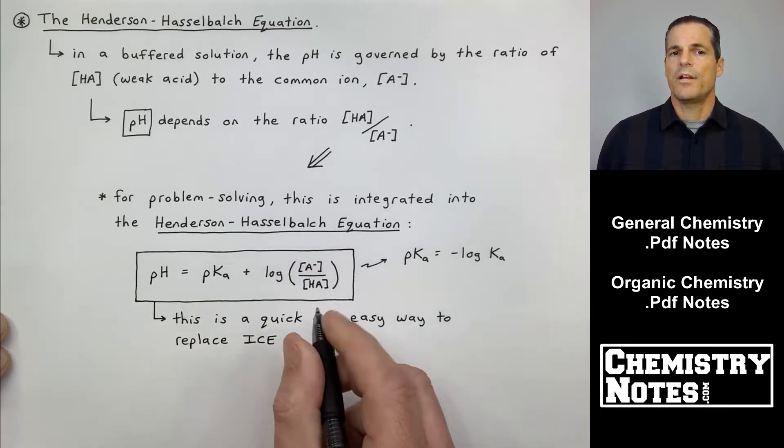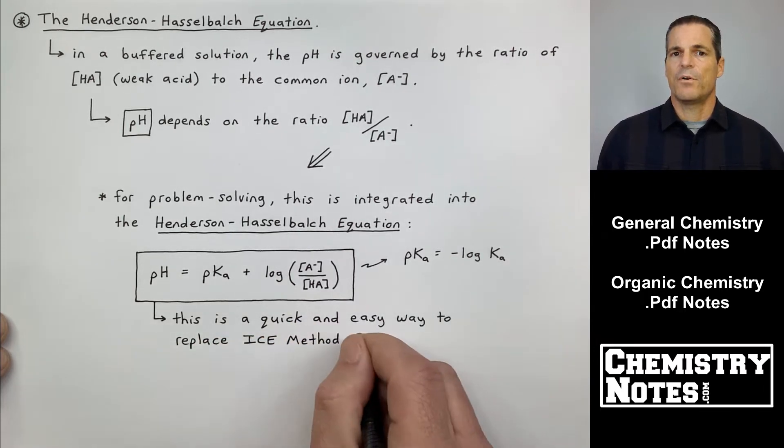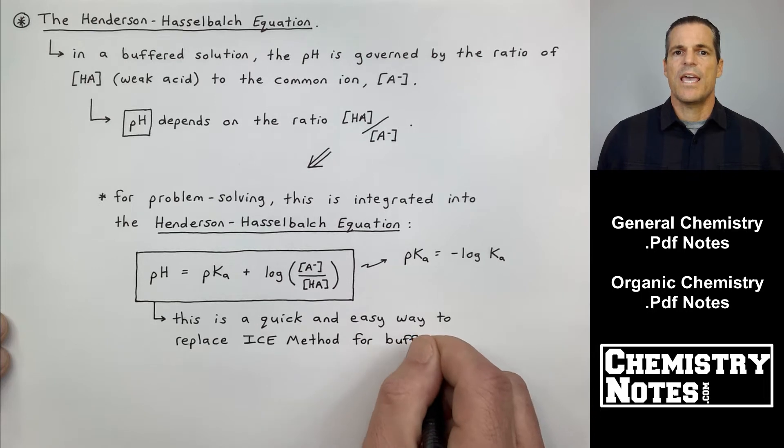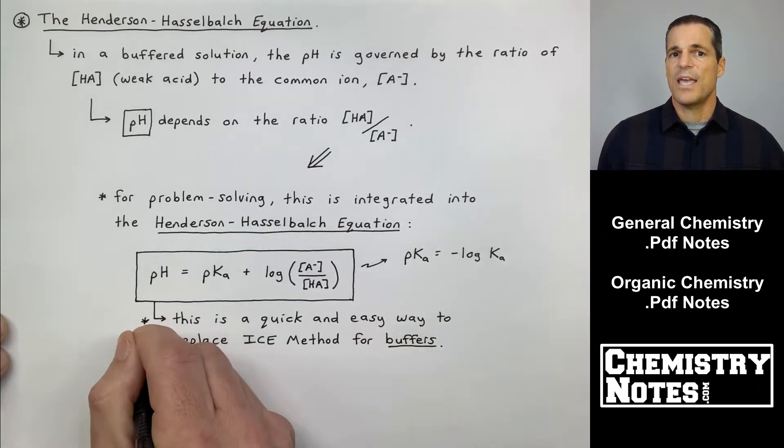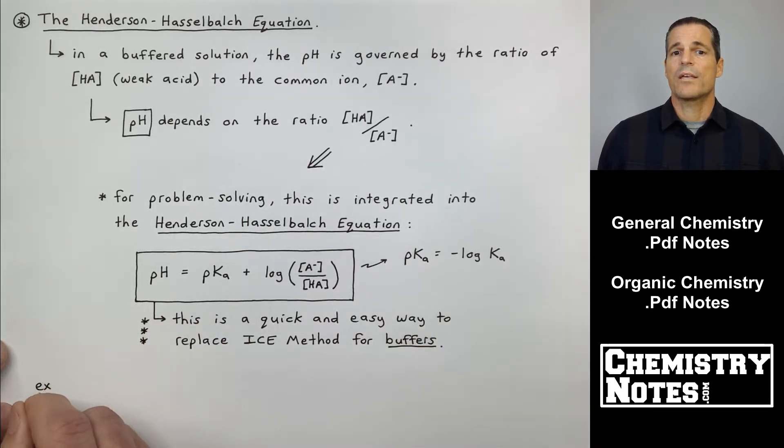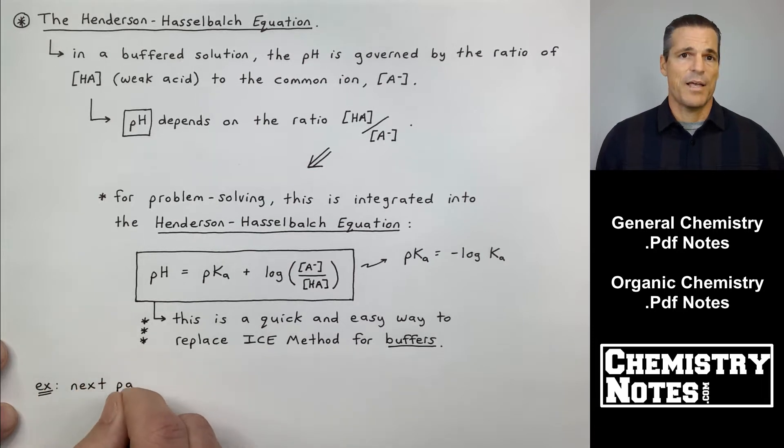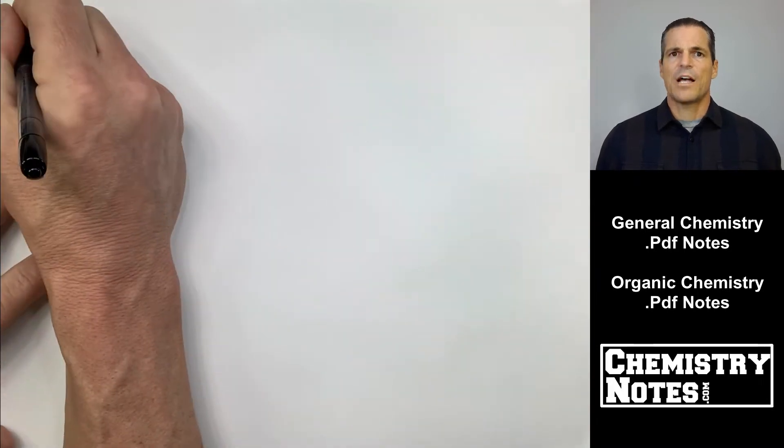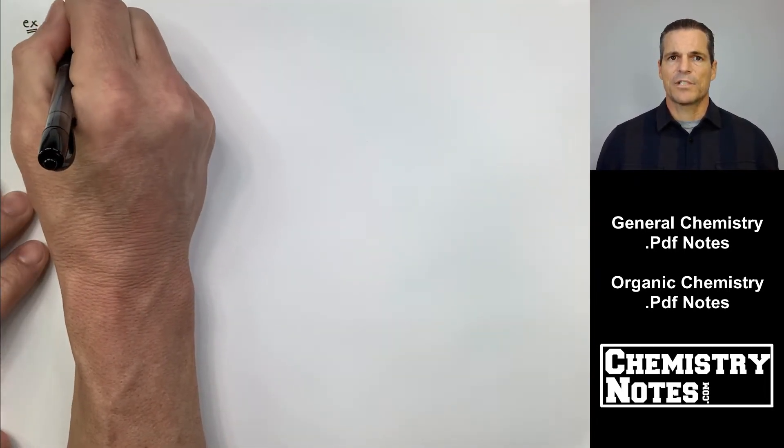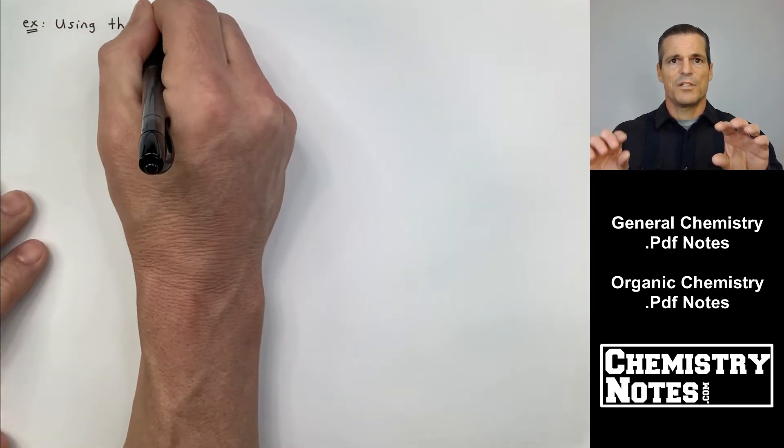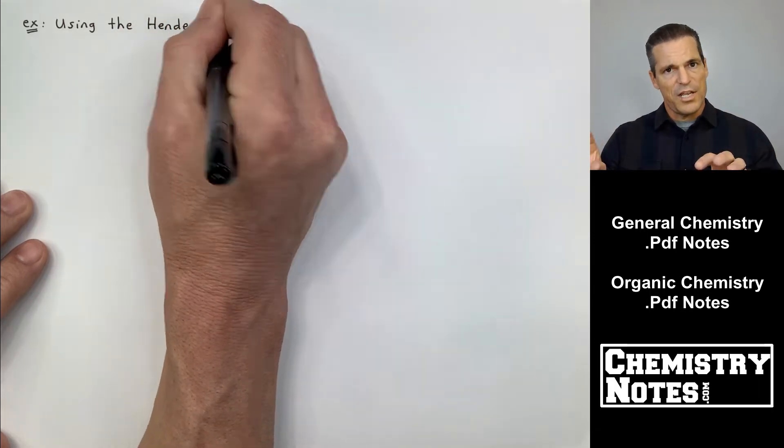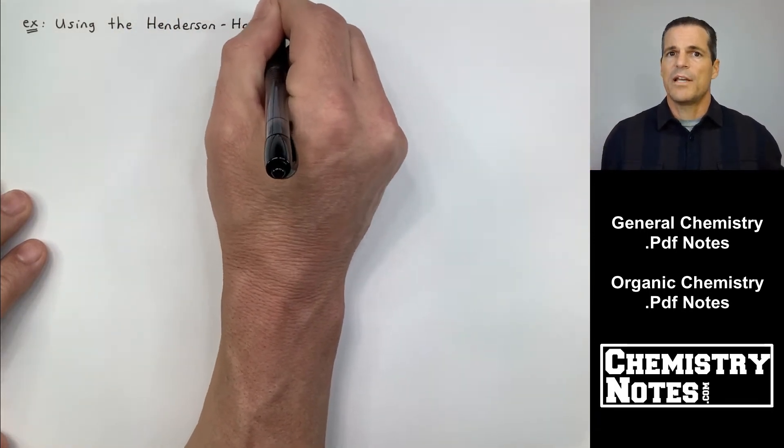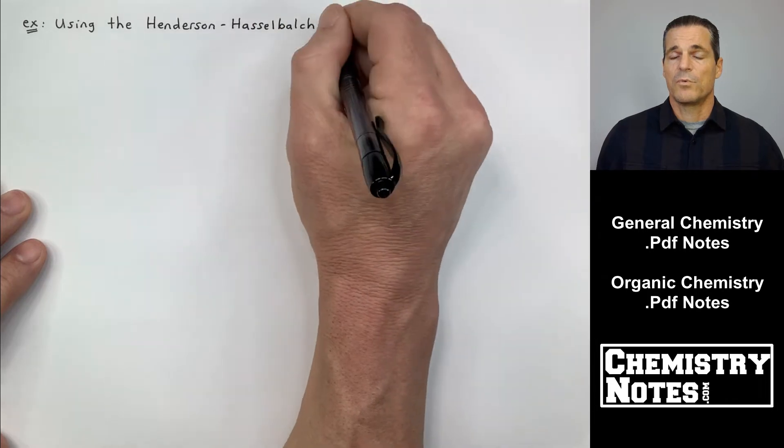Now just as a note here, pKa, if you haven't seen that before, it's a lot like pH. pKa is equal to minus the log of Ka. Now this is a quick, easy way to replace the ICE method for buffers. It's not as informative. I like the ICE method and the ICE tables because you can see the concentrations, but the Henderson Hasselbalch equation will do the same job.